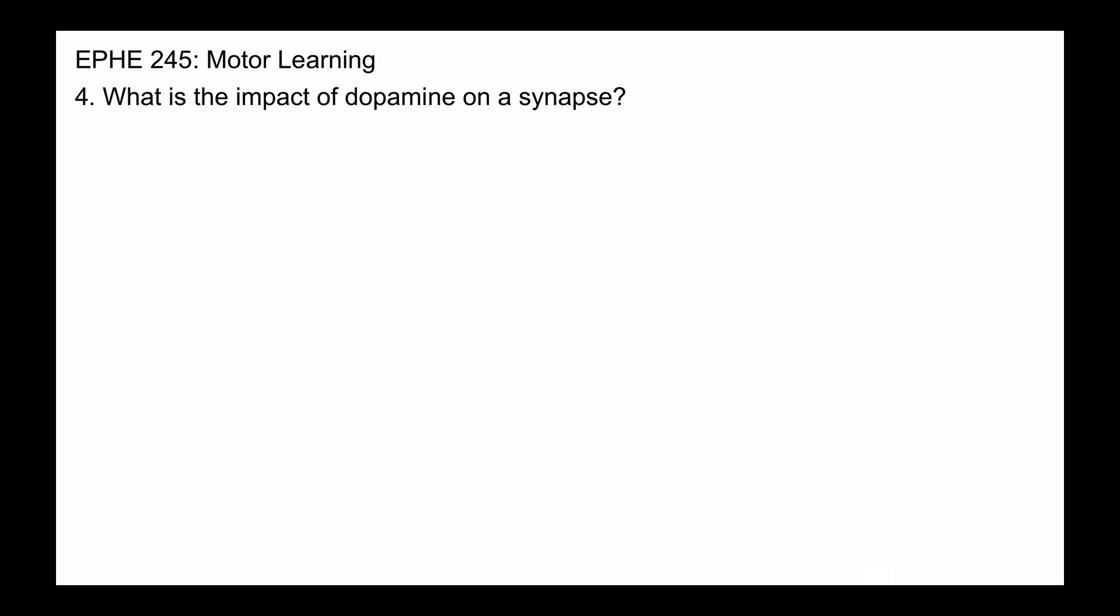What is the impact of dopamine on a synapse? We've been talking about how the dopamine system encodes prediction errors, and we know from the first video in this series that prediction errors are used to modify values. So how does that actually physically occur?